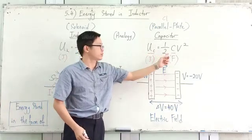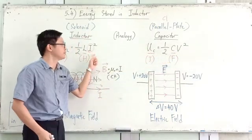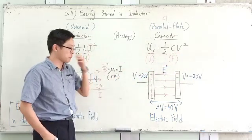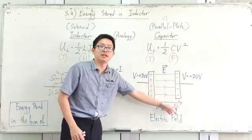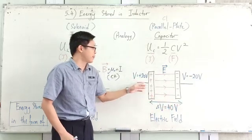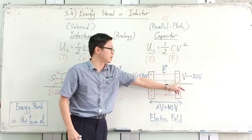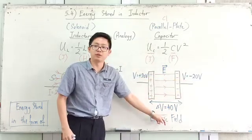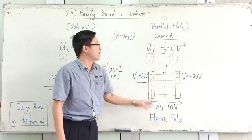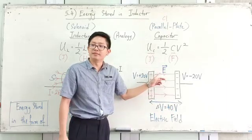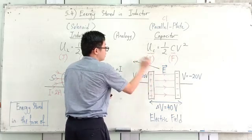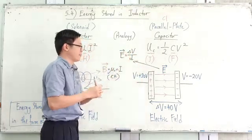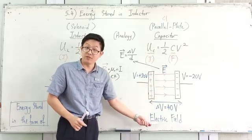Notice that ½LI² uses current, while ½CV² uses voltage. Why does the capacitor use potential difference instead of current? Because between the plates there is a potential difference — for example, positive 20 volts on one terminal and negative 20 volts on the other gives a potential difference of 40 volts. With that potential difference, you get an electric field, since the formula for electric field is ΔV/d.